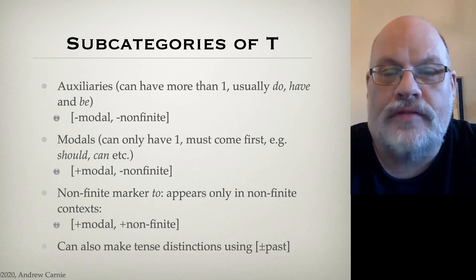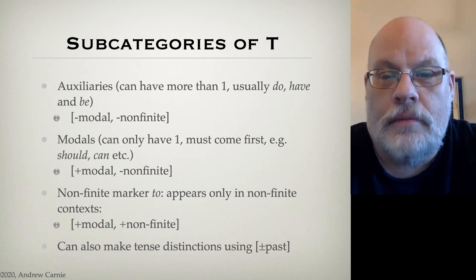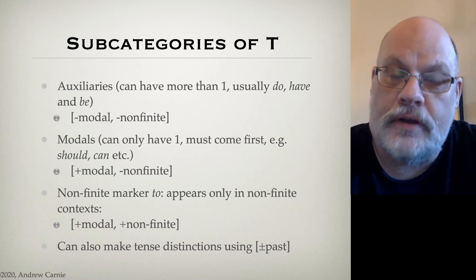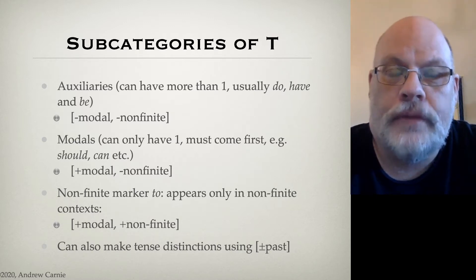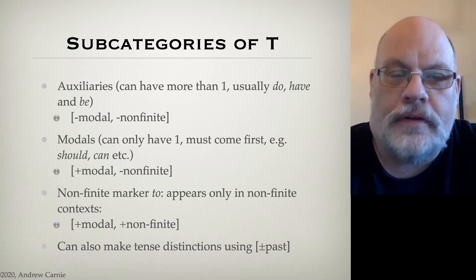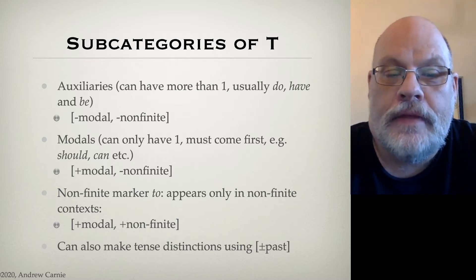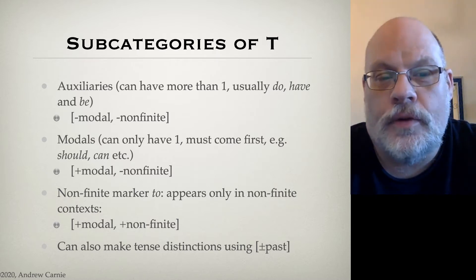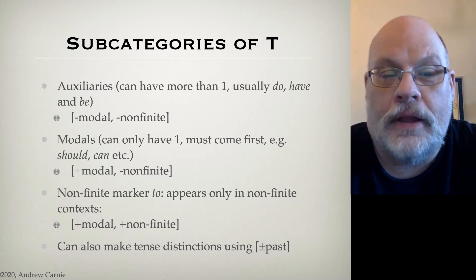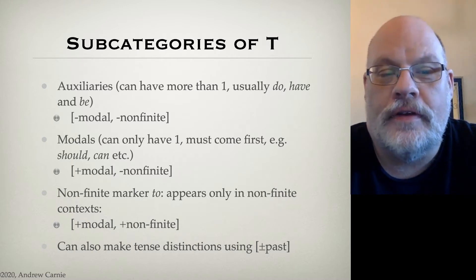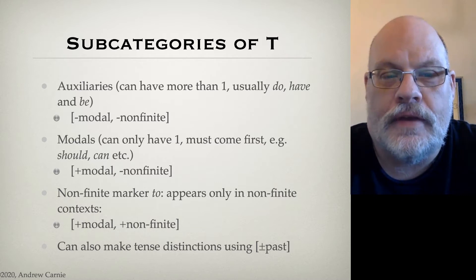For example, you can say has John been eating apples? That's an auxiliary construction where you do an inversion. The features we use for this are maybe a little counterintuitive. We're going to call it [−modal, −non-finite]. That's because we're going to use the plus versions of those features — [+modal] and [+non-finite] — to distinguish the other two categories of T.